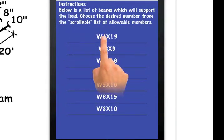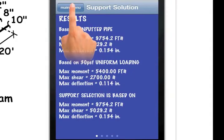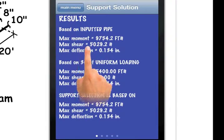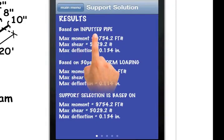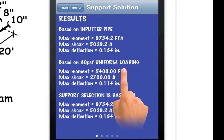I'll go ahead and choose the W4 and the calculator presents me with results of both inputted pipe and uniform loading on the beam. The inputted pipe is the load of the piping. In this example, the 12 inch, the 8 inch, and the 10 inch.